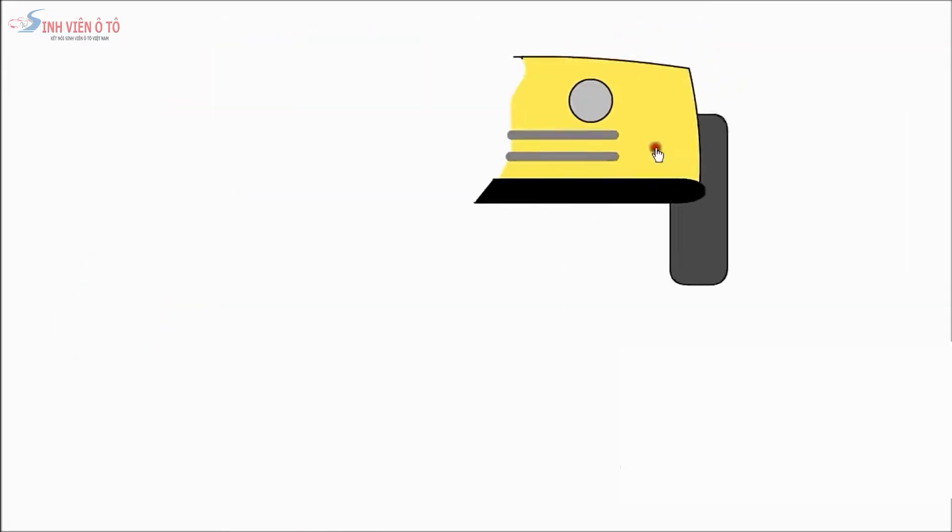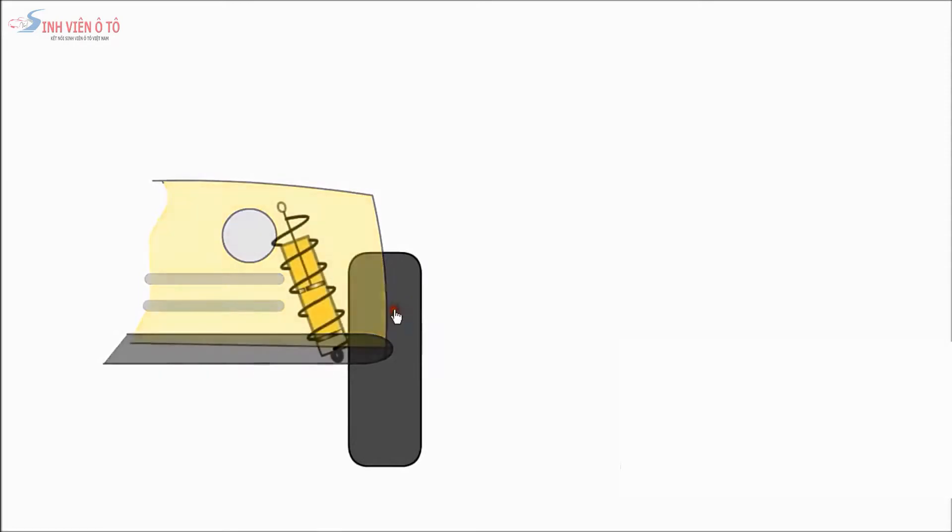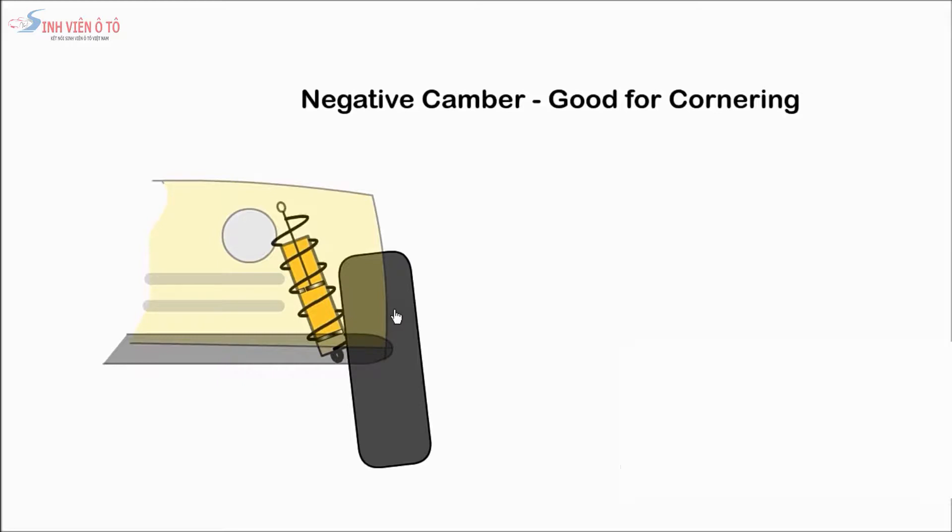When viewed from the front, the tilt of a wheel is called camber. If the wheels lean out at the top, it's called positive camber. With negative camber, the bottom of the tire is further out than the top. This helps to improve cornering ability.